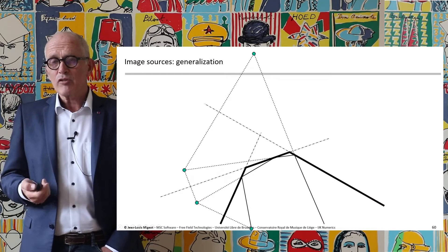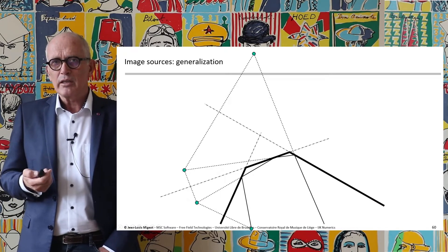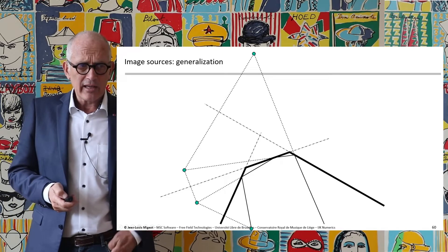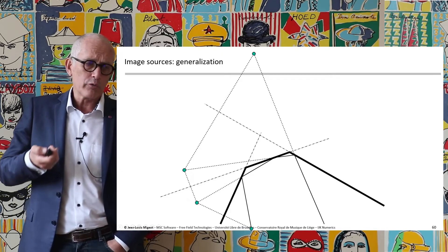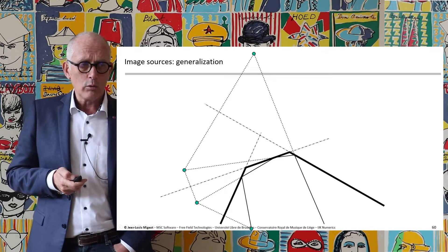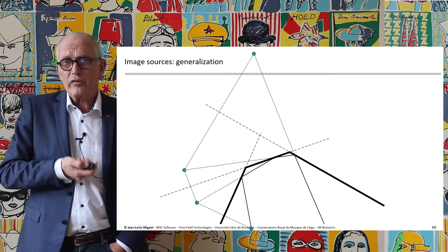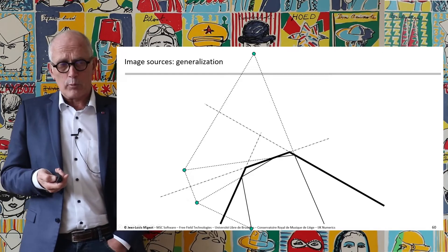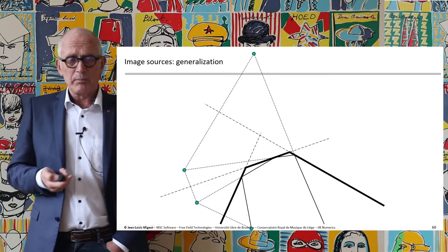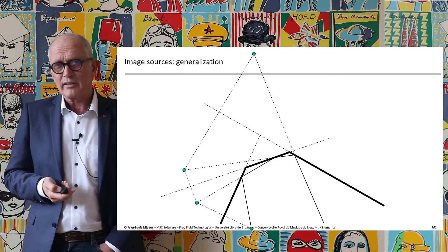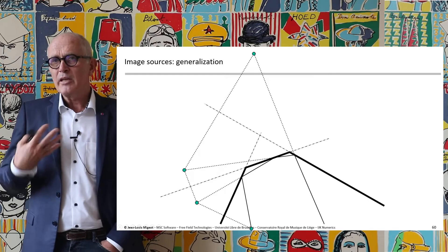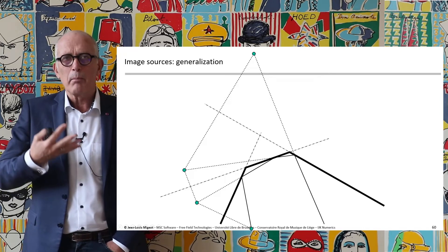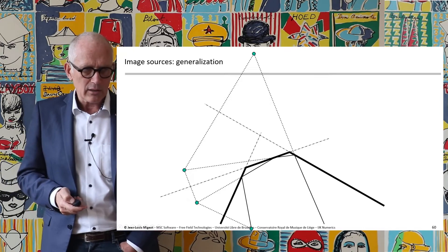The image source method can be generalized, but it becomes very quickly difficult. With a more complicated corner, the sound goes from the source to a wall — you create an image source — then another source for the next propagation path, then another, but it becomes more and more difficult as the complexity of the geometry increases. So the image source technique is interesting conceptually, but is never used as a real methodology for calculating complex sound fields.